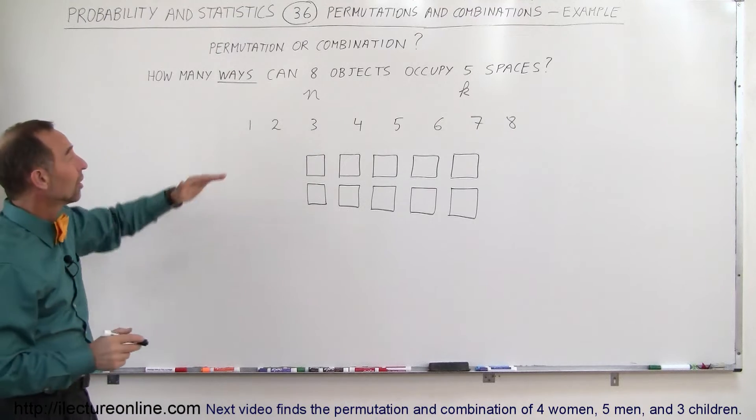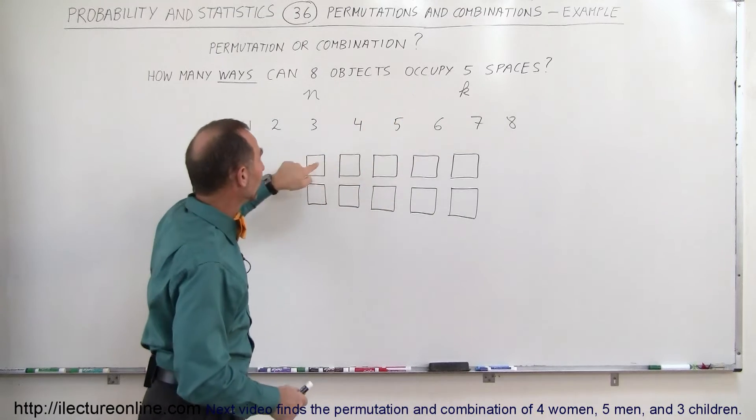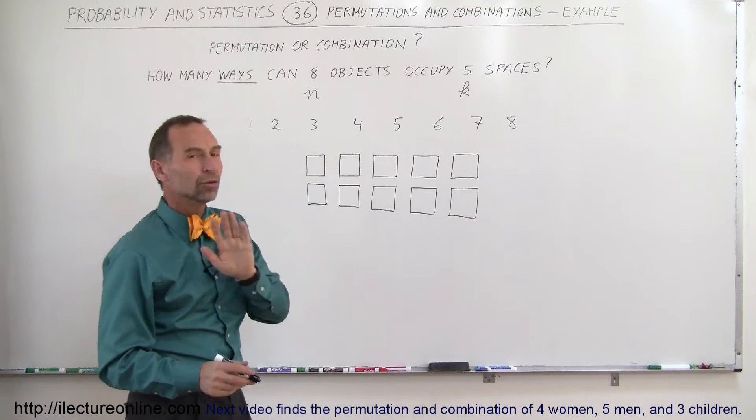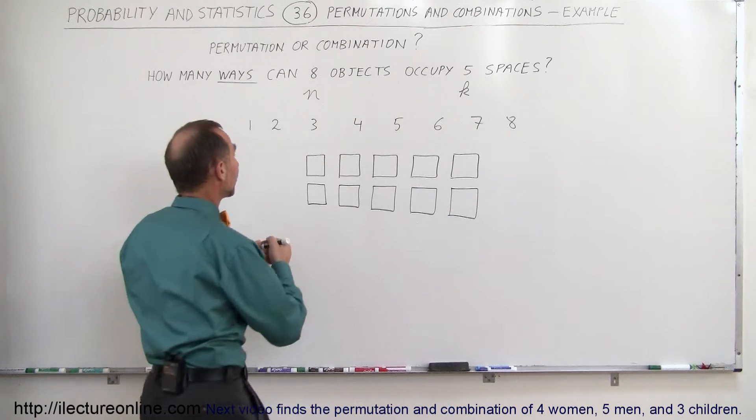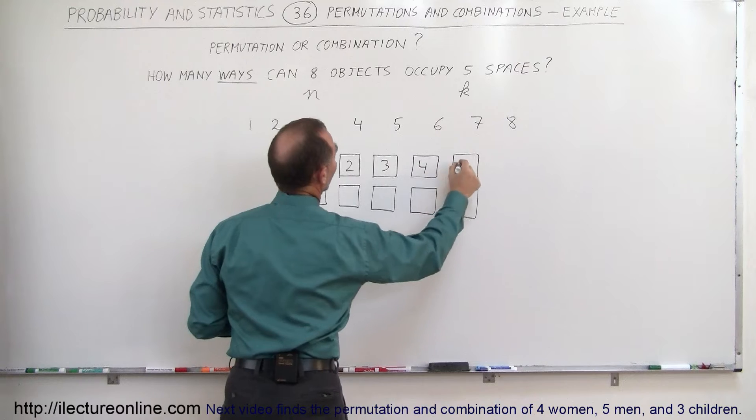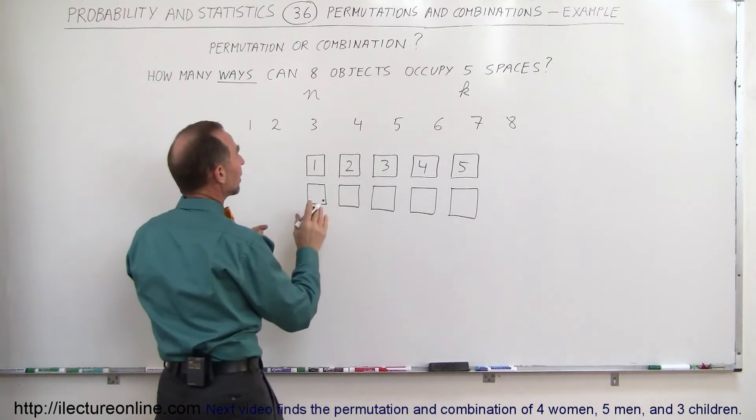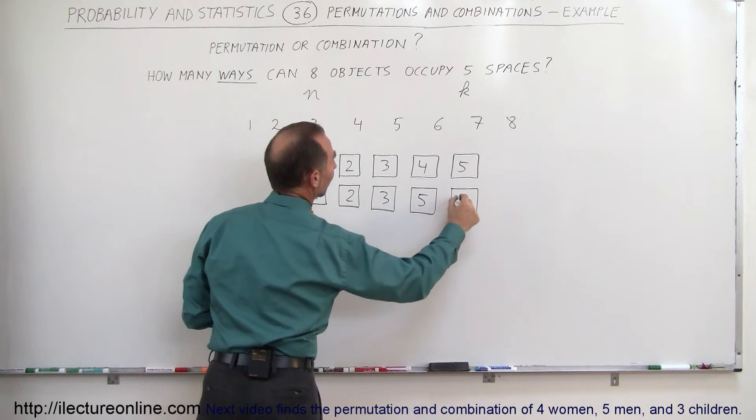Which means we have 8 objects. Let's say we have 8 numbers, 1 through 8, and then we have 5 spaces: 1, 2, 3, 4, 5. To see what the difference is between permutations and combinations, let me put down the first 5 numbers: 1, 2, 3, 4, 5. Now, if I then write it down like this: 1, 2, 3, 5, 4.